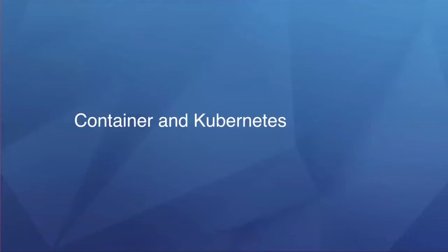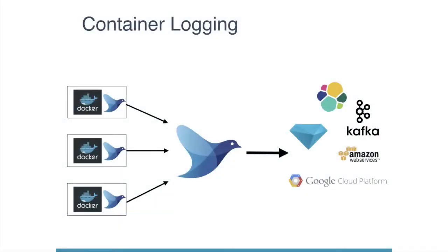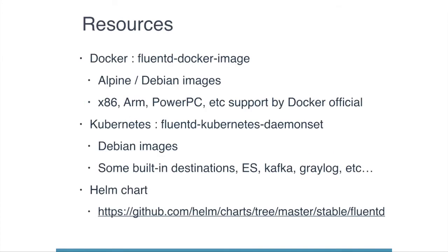The last part is about containers and Fluentd. Fluentd is widely used in container logging, so I will talk about how to collect logs from containers. First, I'll show several resources for container logging. For Docker, we provide RPM and Debian images. We recommend using the Debian images in production, because they work with systemd and jemalloc — we use jemalloc to optimize memory usage.